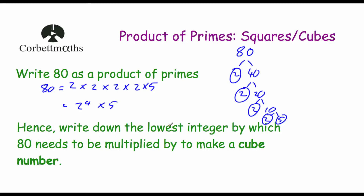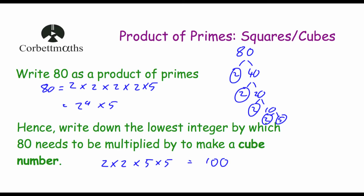Part B says: hence write down the lowest integer by which 80 needs to be multiplied by to make a cube number. For cube numbers, powers need to be multiples of 3. We've got 2 to the power of 4 — we want 2 to the power of 6, so we multiply by 2 times 2. The 5 is 5 to the power of 1, so we need to multiply by 5 times 5 to get 5 to the power of 3. So the lowest integer is 2 times 2 times 5 times 5, which is 100. Multiplying 80 by 100 gives 8,000, which is 20 cubed.